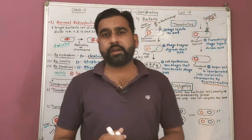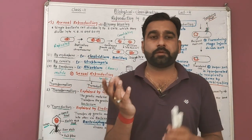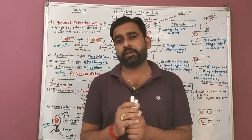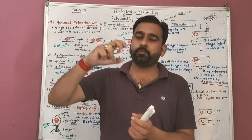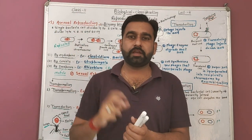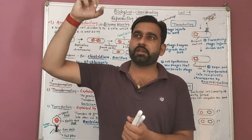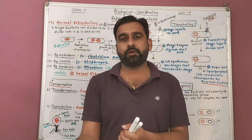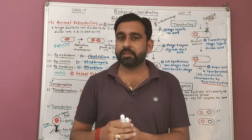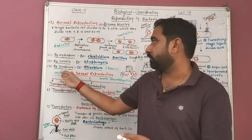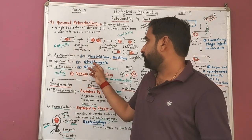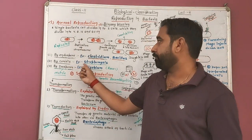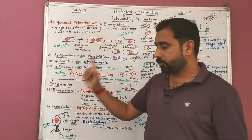Next, reproduction by conidia. As you studied in fungi, conidia are a type of reproduction. These conidia are arranged in a series or chain. Their origin is exogenous. When they separate, they germinate and form new mycelium. The same condition is seen in bacteria by conidia — example: Streptomyces.